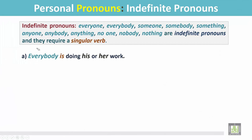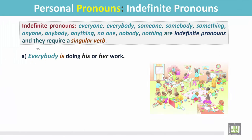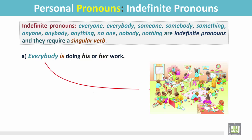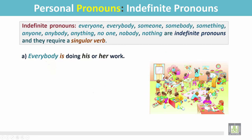Example A: Everybody is doing his or her work. In this picture we see everyone is busy with his own work. Everybody mentions each and every single person in the picture. The verb is singular.